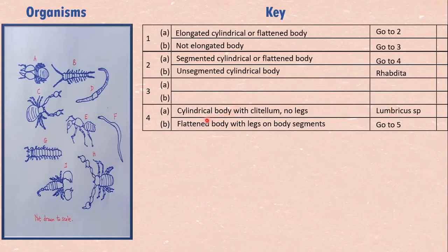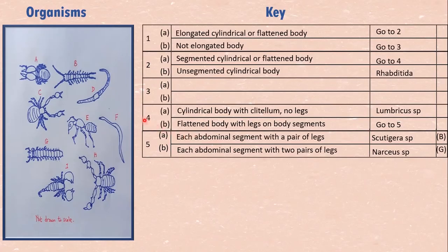But then we come to flattened body but have legs. Each abdominal segment has a pair of walking legs. That is this B here, Scutigera species. But the other friend has two pairs of walking legs on each segment. And that is Narceus, a type of millipede.